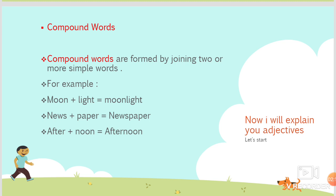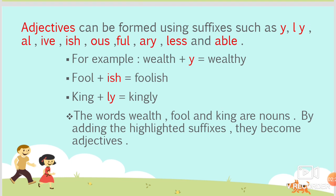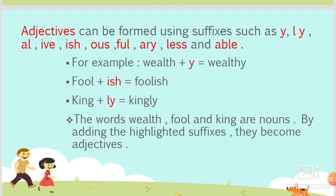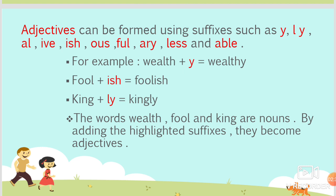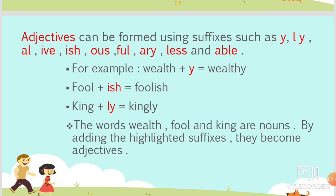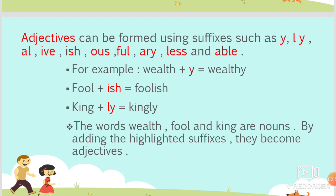Now I will explain adjectives. Adjectives can be formed using suffixes such as -y, -ly, -al, -ible, -ish, -ous, -ful, -ary, -less, and -able. For example, wealth with -y becomes wealthy; fool with -ish becomes foolish; king with -ly becomes kingly. The words wealth, fool, and king are nouns, and by adding the highlighted suffixes, they become adjectives.